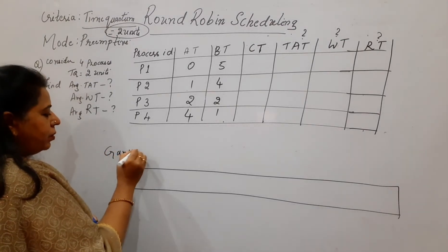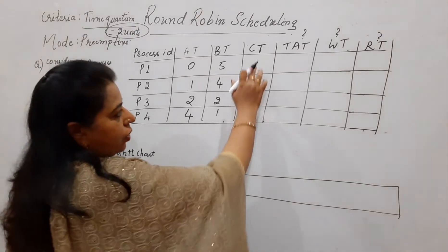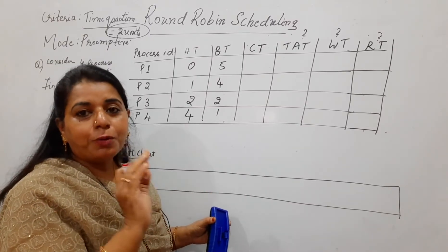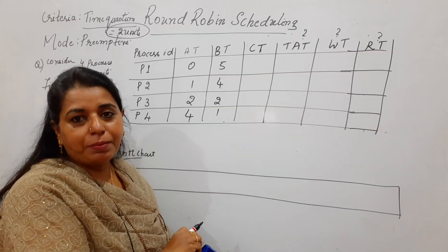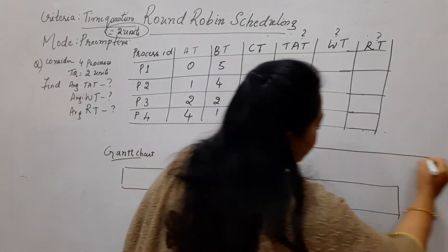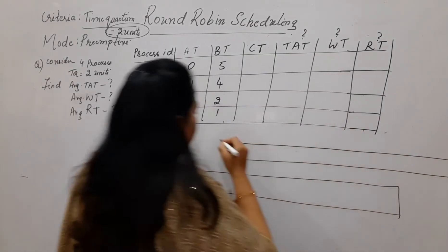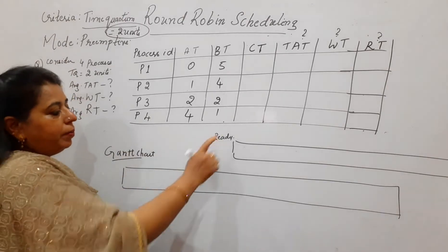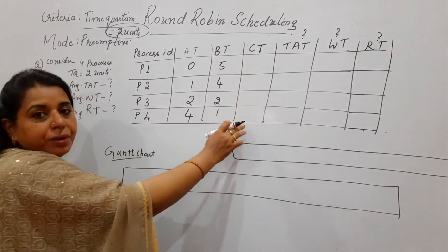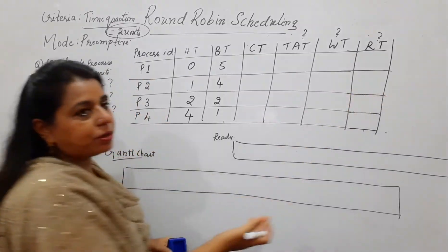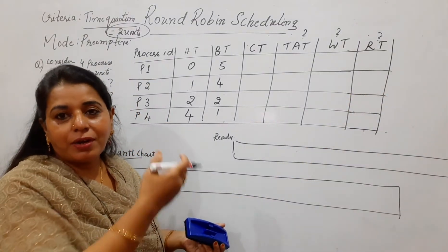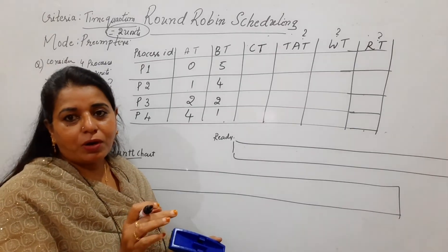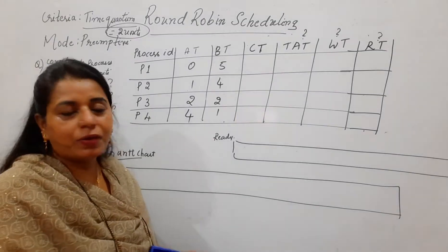Whatever I was explaining earlier about the Gantt chart is essentially the running queue used to fill values for the completion time. But for round robin, since it is a preemptive type of scheduling, it is better to maintain one more queue to keep track of all the processes' pending burst time — this queue is called the ready queue. Remember, you have to arrive at the correct values for completion time, because if these go wrong, the subsequent values — turnaround time, waiting time, and response time — may also go wrong and you will lose marks.